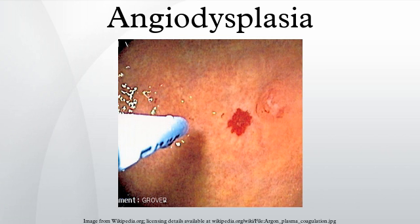Embolization through angiography is occasionally considered for severely bleeding lesions that cannot be visualized on colonoscopy. If the bleeding is from multiple or inaccessible sites, systemic therapy with medication may be necessary. First-line options include the antifibrinolytics tranexamic acid or aminocaproic acid. Estrogens can be used to stop bleeding from angiodysplasia by causing mild hypercoagulability, though their side effects can be dangerous in both sexes. In difficult cases, there have been positive reports about octreotide and thalidomide. In severe or treatment-resistant cases, surgery may be necessary to arrest the bleeding.